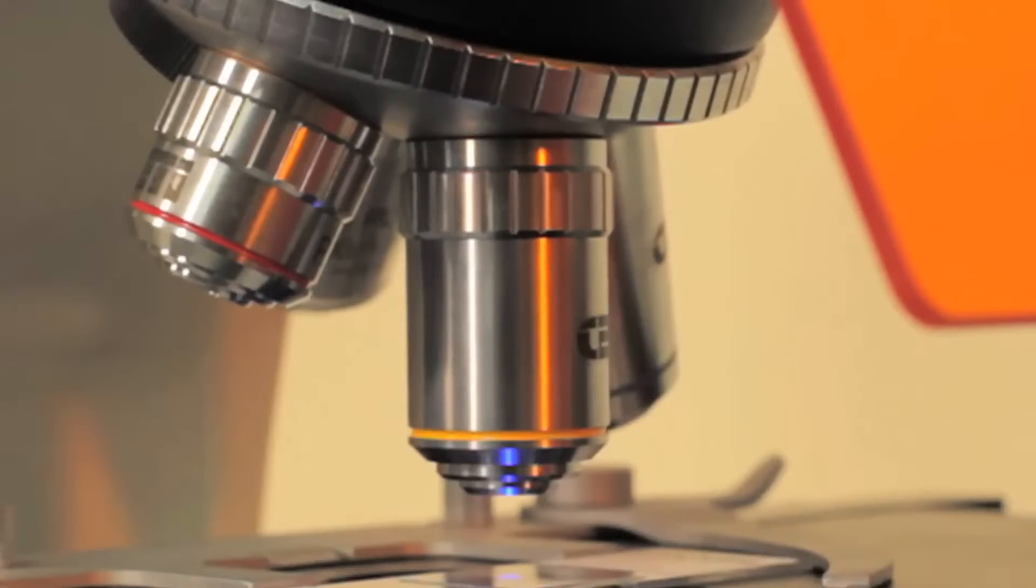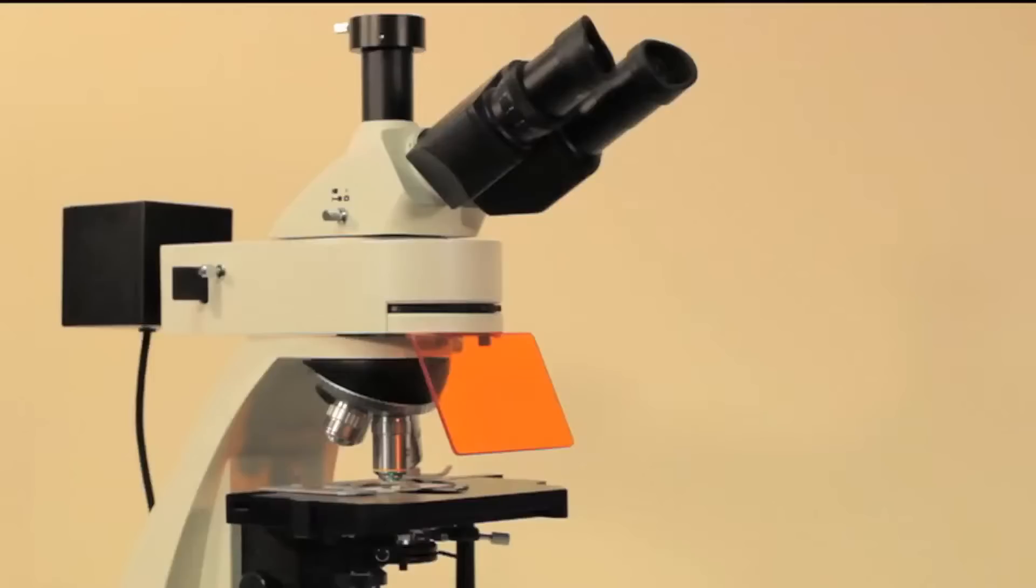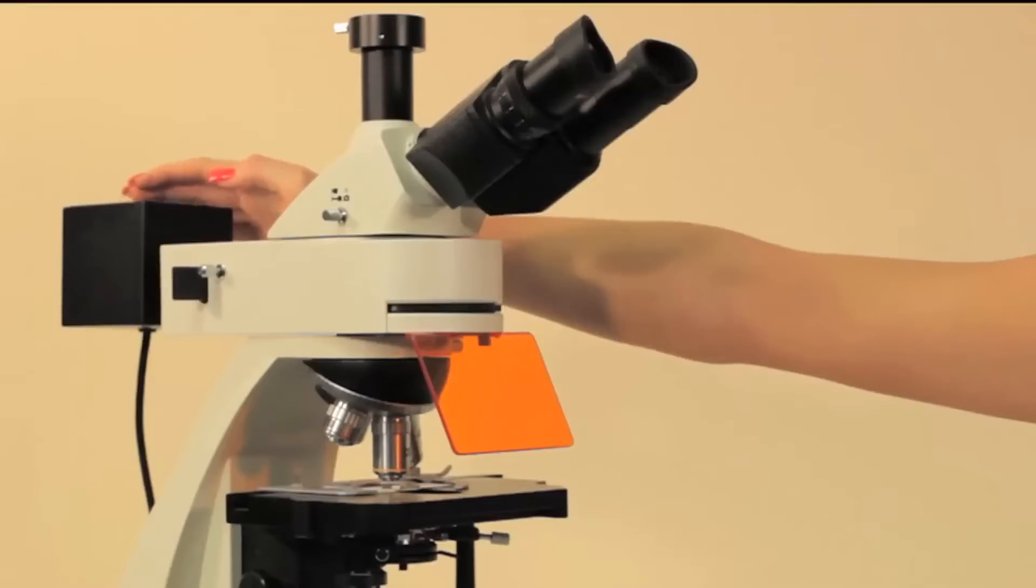Extended bulb life, as the LED has a life of 30,000 hours as opposed to 300 hours for mercury bulbs. Mercury-free, so no hazard or disposal issues of a mercury light source when the bulb needs replacing.